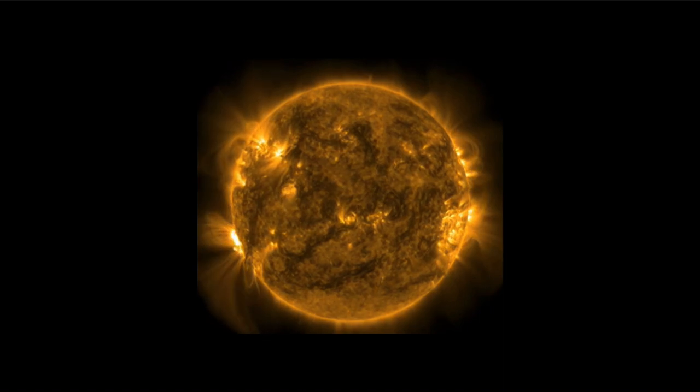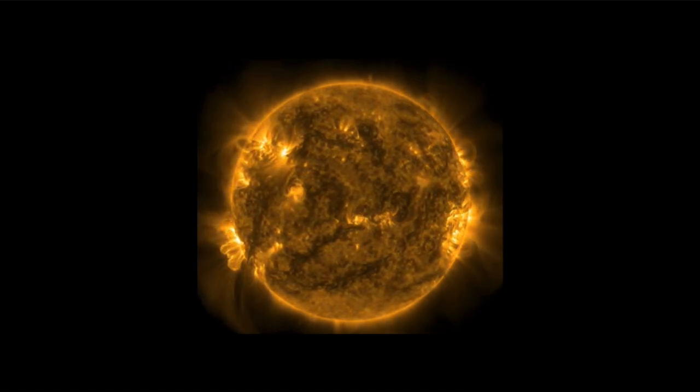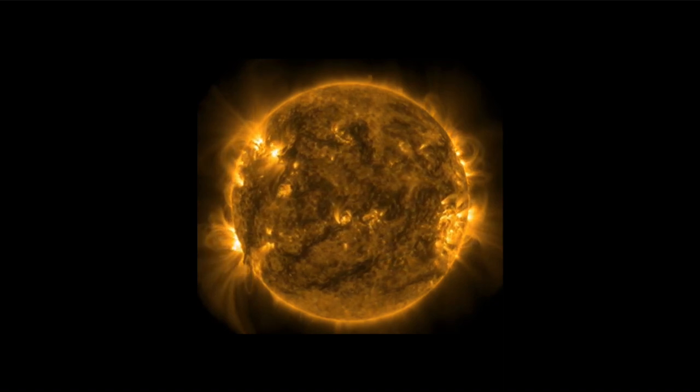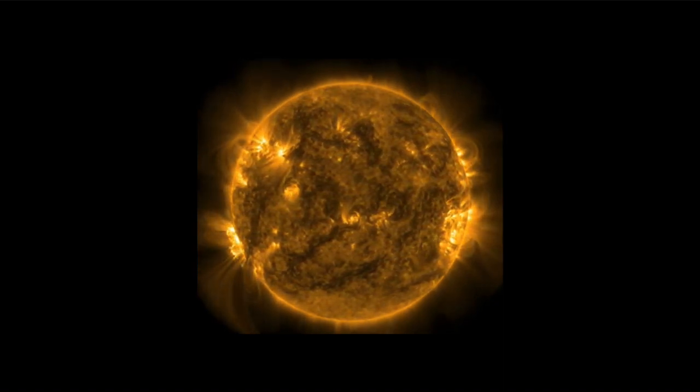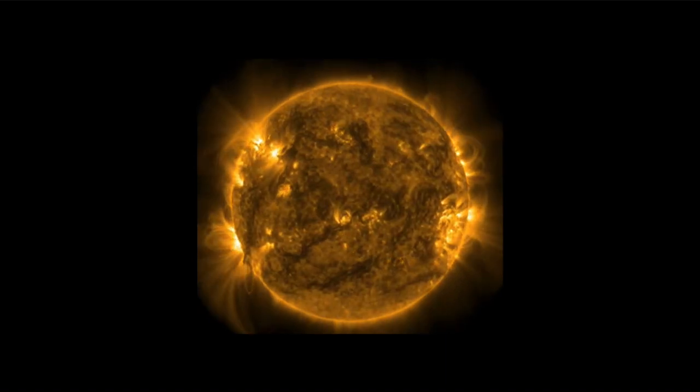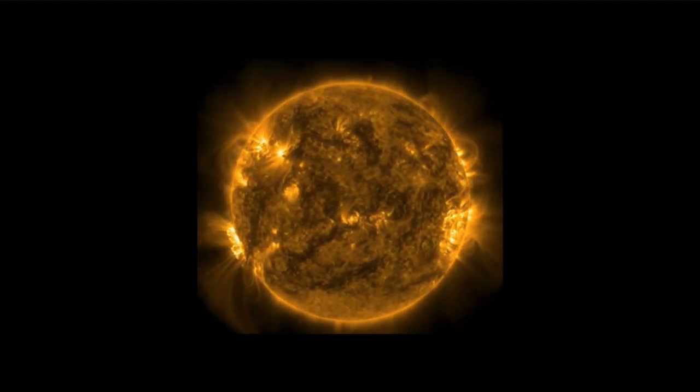This one that we're seeing isn't coming toward Earth, that's still off to the edge. But it is quite possible that future ones could come toward Earth, giving us some of those aurora that we've seen last time and even causing associated damages here on Earth if they are strong enough.